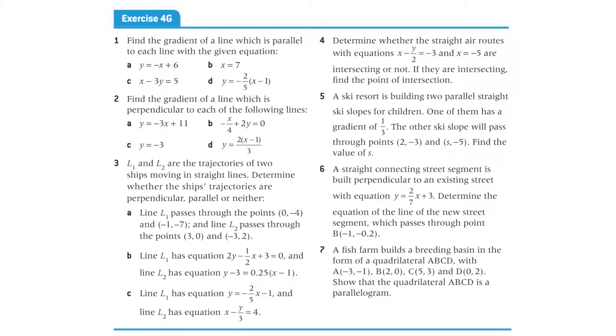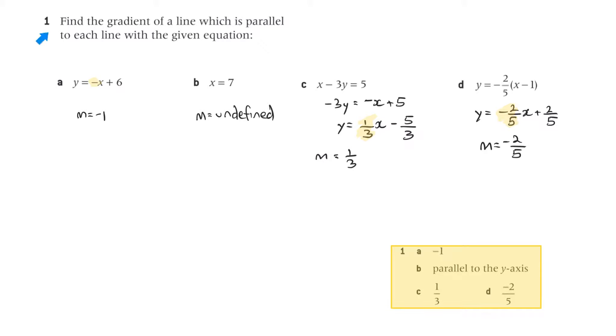Exercise 4G, questions 1 through 7. Question 1: find the gradient of a line which is parallel to each line with the given equation.